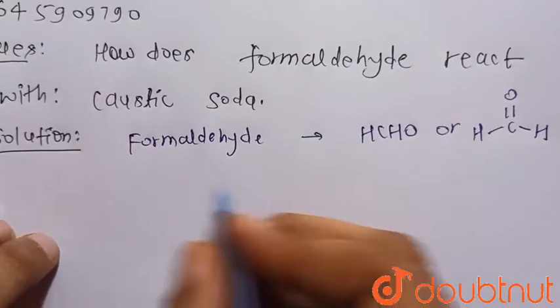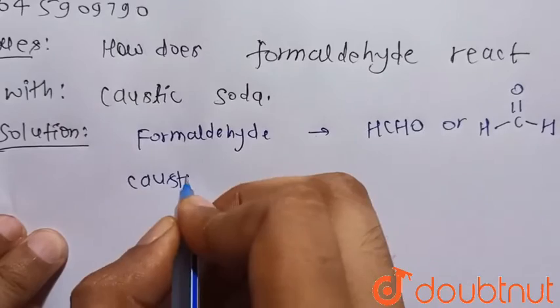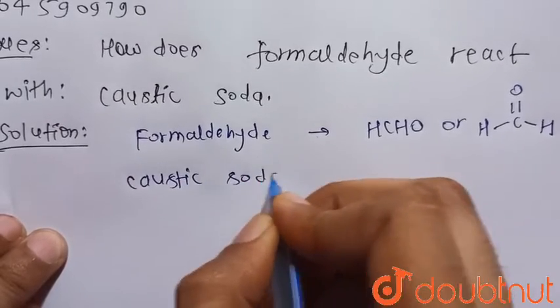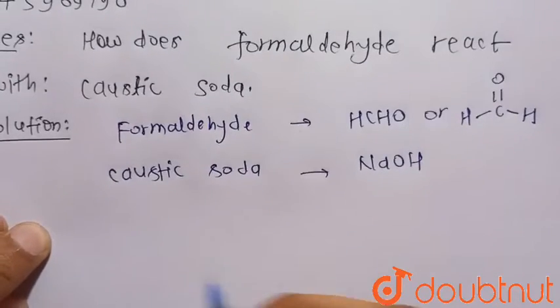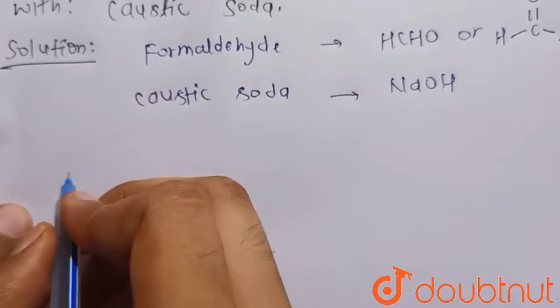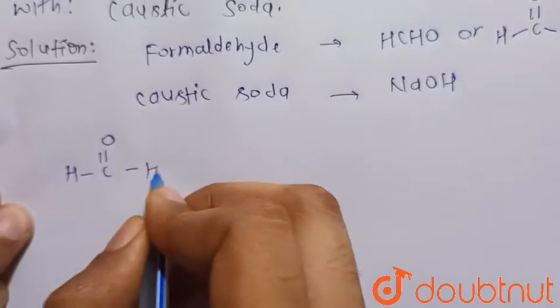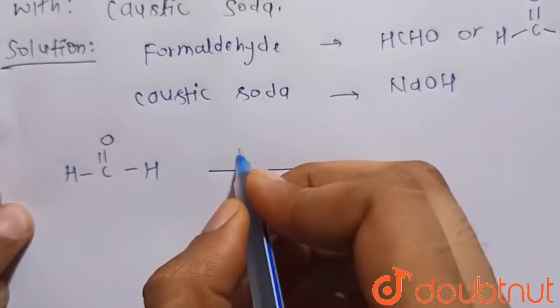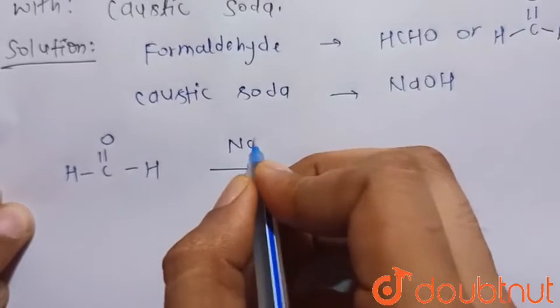And we know that the chemical formula of caustic soda is NaOH. So when they react with each other, formaldehyde reacts with concentrated NaOH or 50% NaOH.